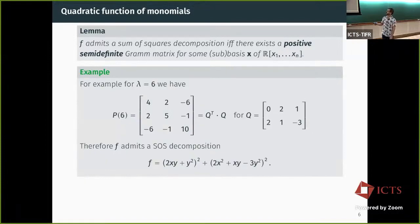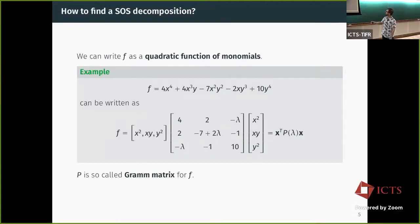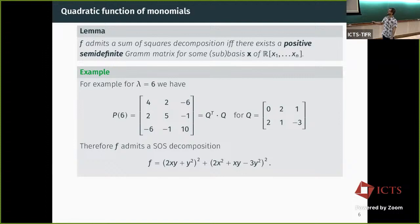A simple lemma from linear algebra says that a polynomial is a positive definite quadratic form or admits a sum of squares decomposition if and only if there exists a positive semi-definite Gram matrix for some basis. In our example, if I pick lambda equal to 6, then this matrix is positive semi-definite. So I know there exists a matrix Q such that Q^T Q = P. From this matrix Q I can read off my sum of squares decomposition by looking at the rows of this matrix and evaluating against the basis. The number of squares equals the rank of Q.